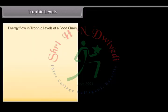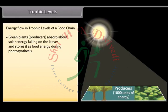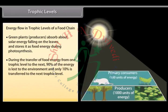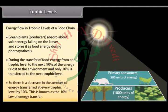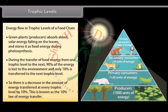Green plants (producers) absorb about 1% of solar energy falling on the leaves and store it. During the transfer of food energy from one trophic level to the next, 90% of the energy is lost to the environment and only 10% is transferred to the next trophic level. There is a decrease in the amount of food energy transferred at every trophic level by 10%. This is known as the 10% law of energy transfer.